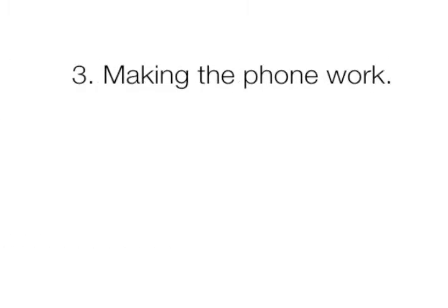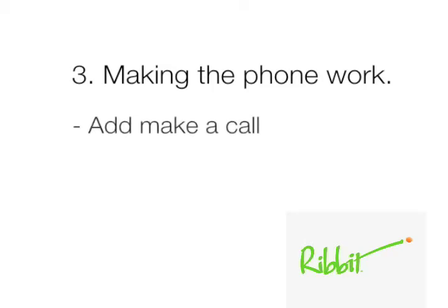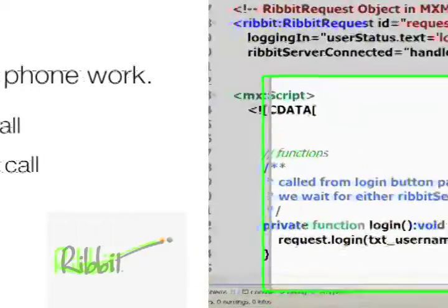Here in chapter three, we're going to wire up our phone using the Ribbit technology. We're going to be using Ribbit's methods and events to make all of this happen — methods like make a call, and some really cool events like incoming call, where the Flex application just needs to sit there and listen, served up by the Ribbit server.